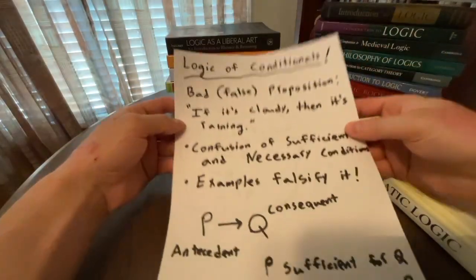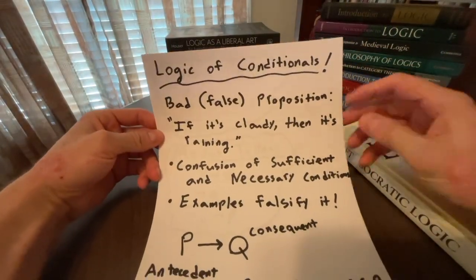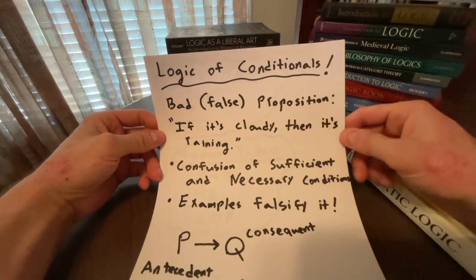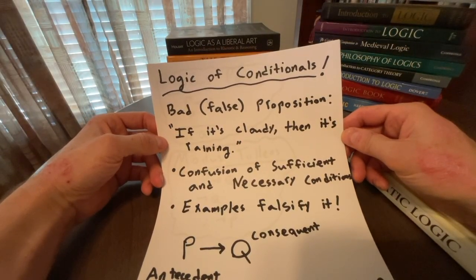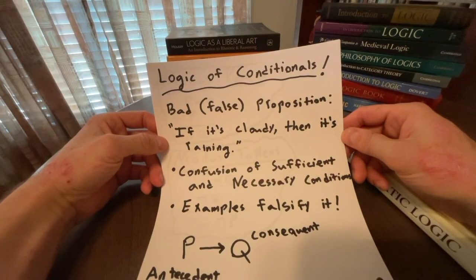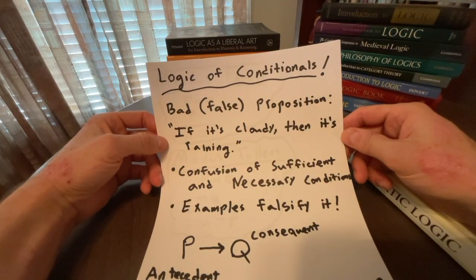So let's first briefly look at some notes. These are not from the textbook. These are my own notes. But I hope they're going to come in handy because I think that showing a bad or false proposition really illuminates what a conditional proposition is. So for example, if it's cloudy, then it's raining. Well, that's a bad or just a false proposition because there are two problems here.